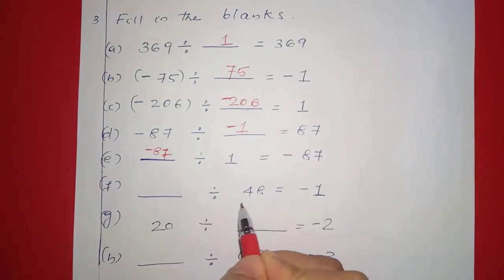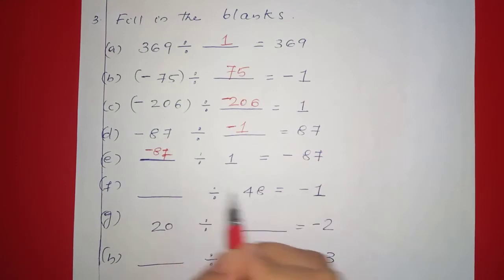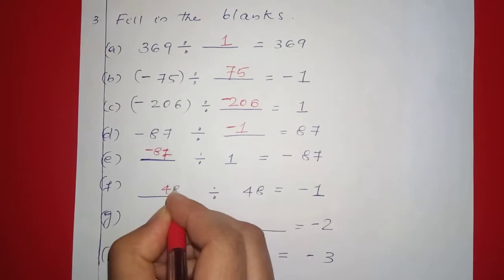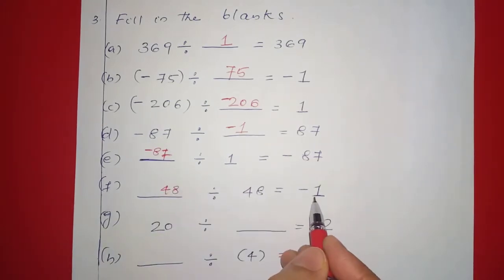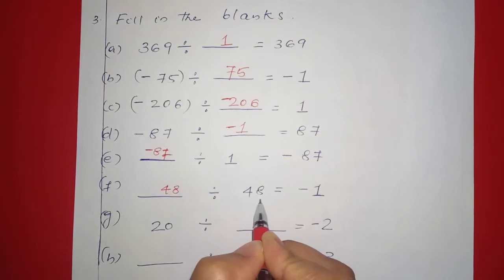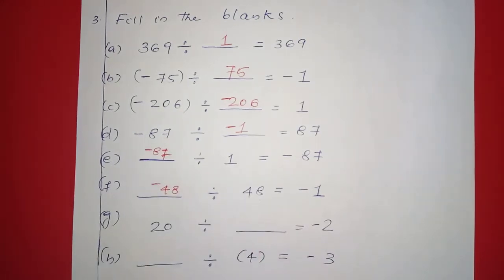Next: dash division 48 is equal to negative 1. We need the same number 48, and since the result is negative 1, the answer is negative 48. So negative 48 division 48 is equal to negative 1.